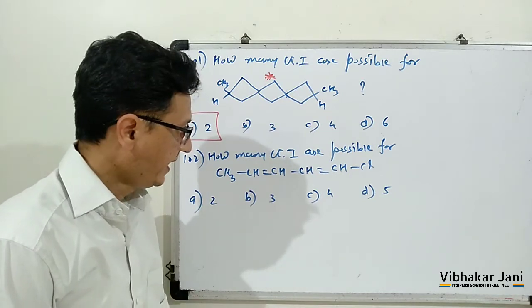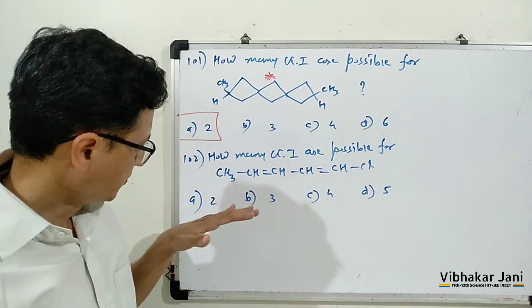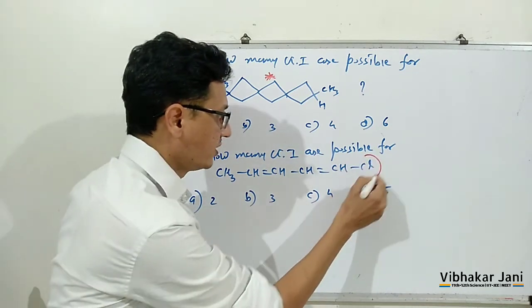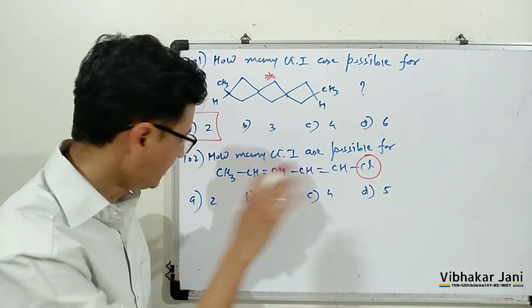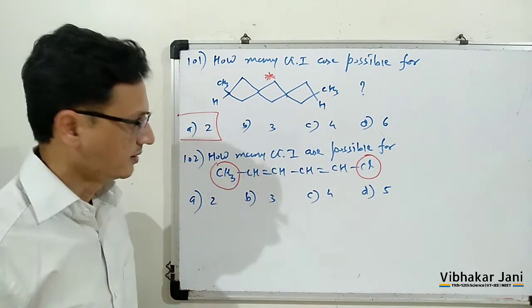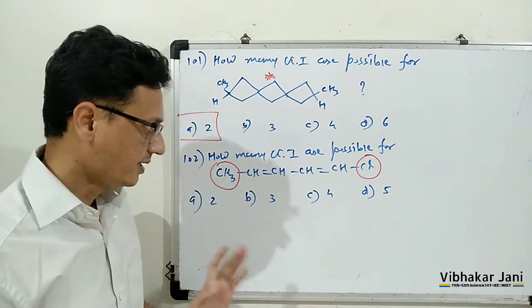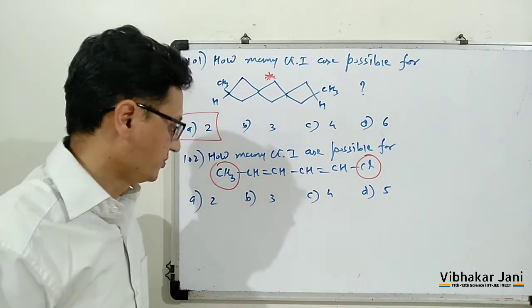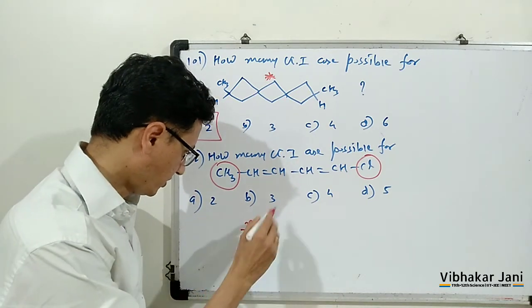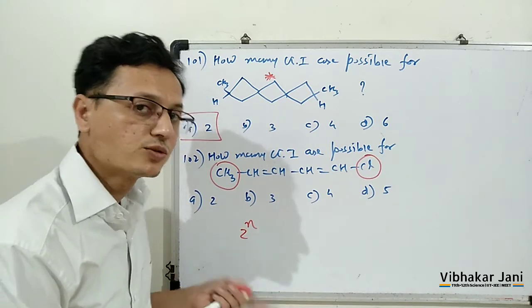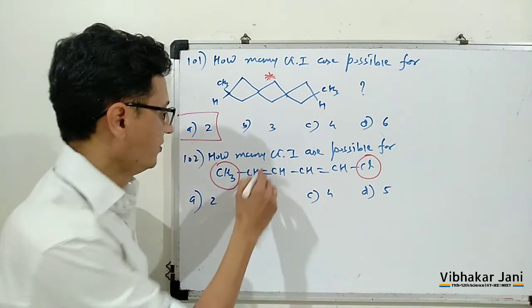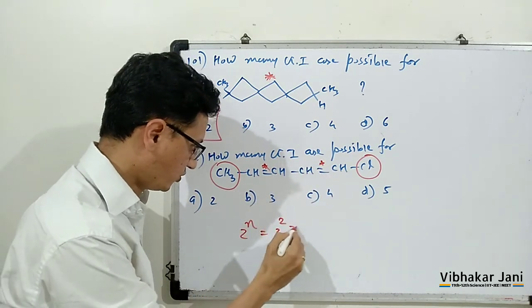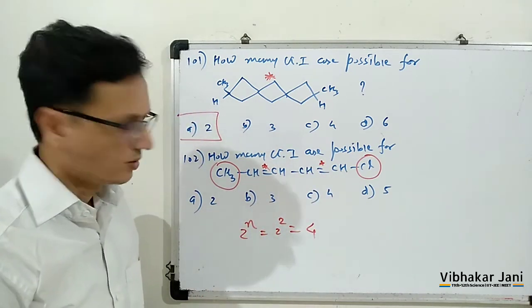If you look at this molecule carefully, it is unsymmetrical: one chlorine over here at this end and one CH3 at this end. If a molecule is unsymmetrical, then it is very simple to find out the total number of GI by using the formula 2 raised to n. Here we have two stereocenters, 1 and 2, so 2 raised to 2 means 4.